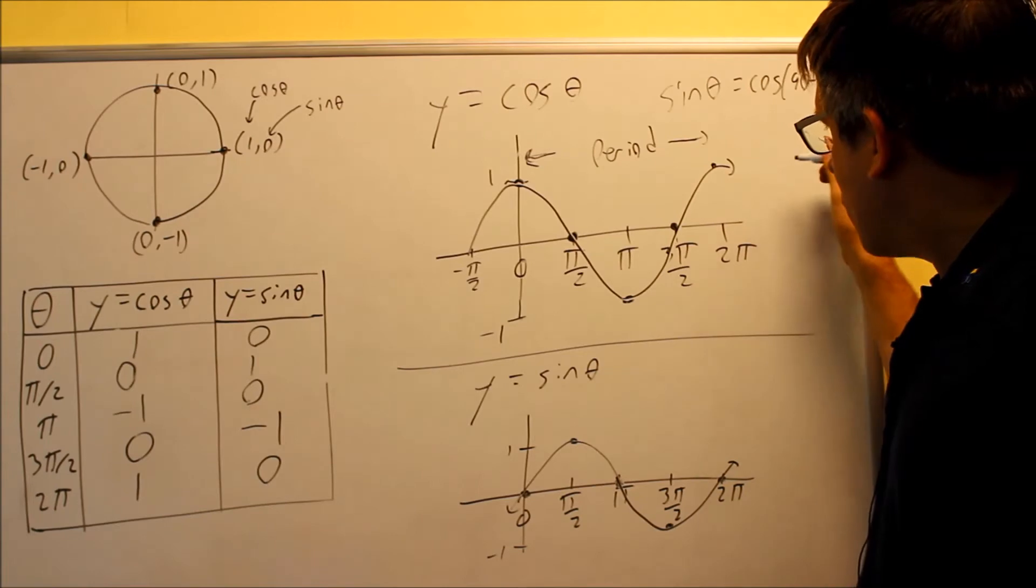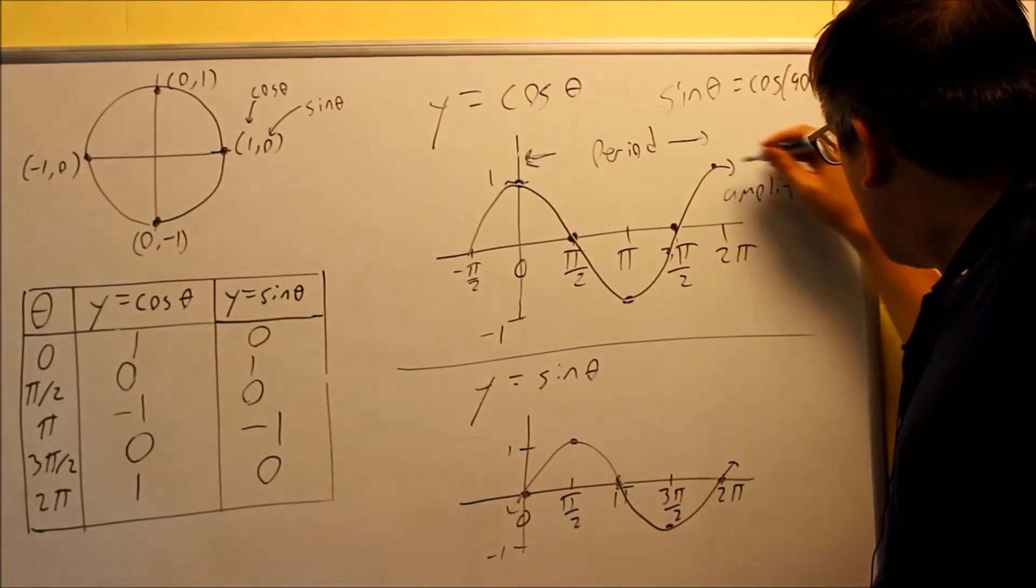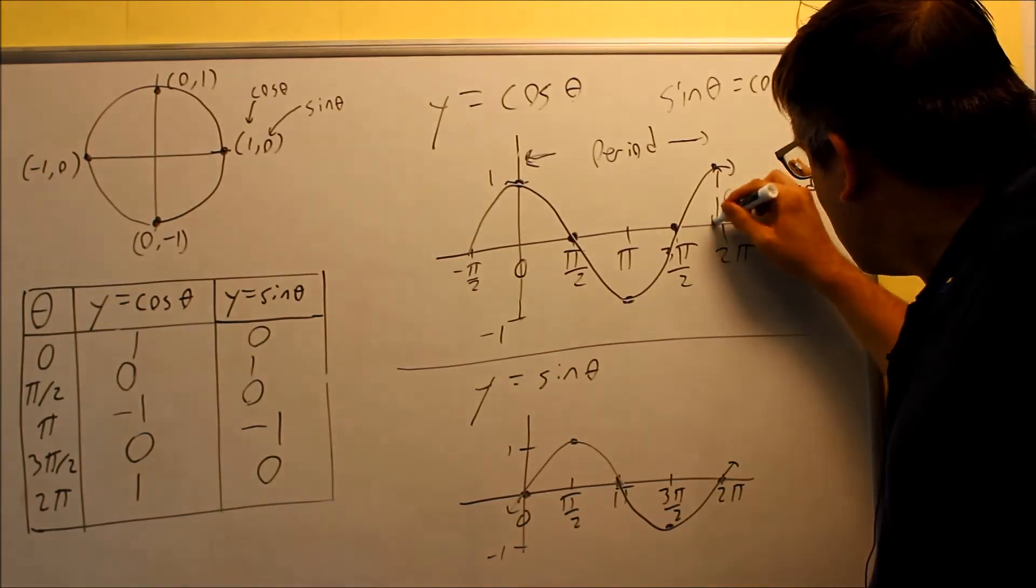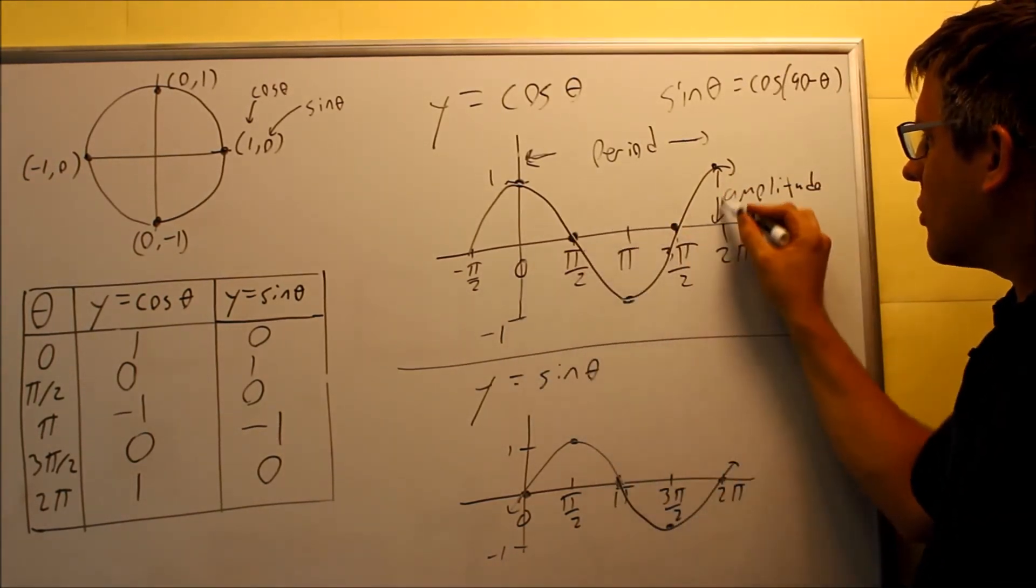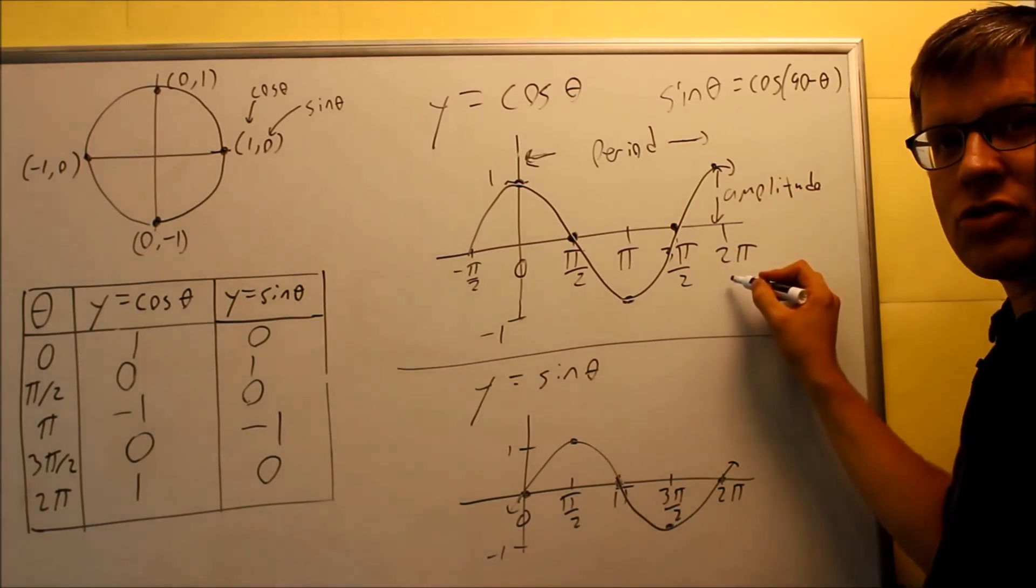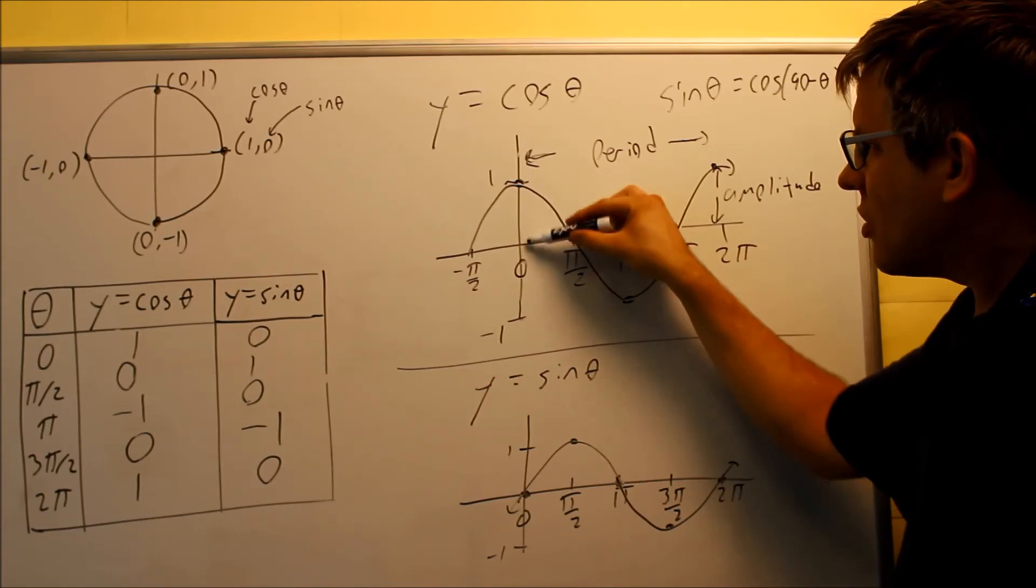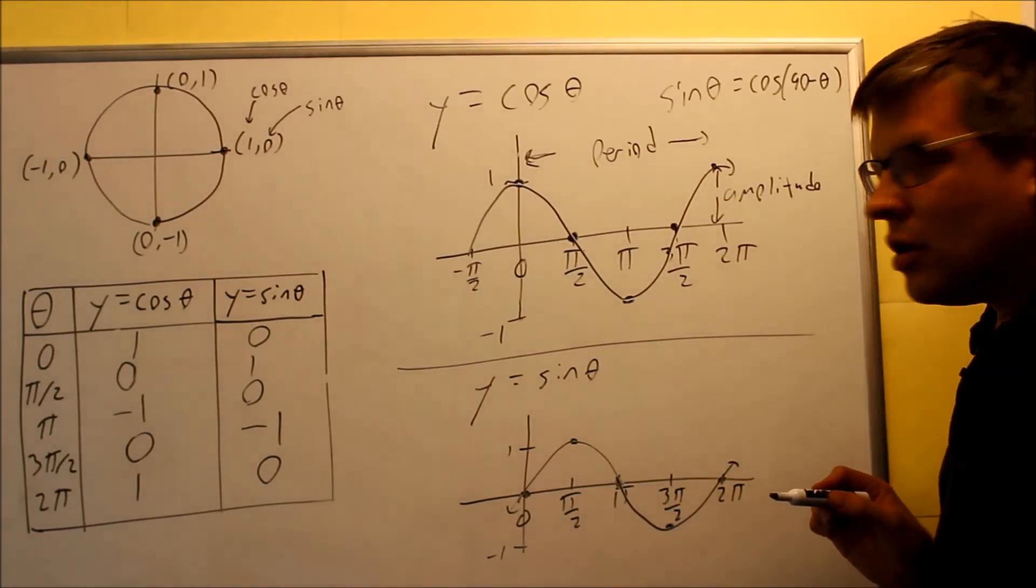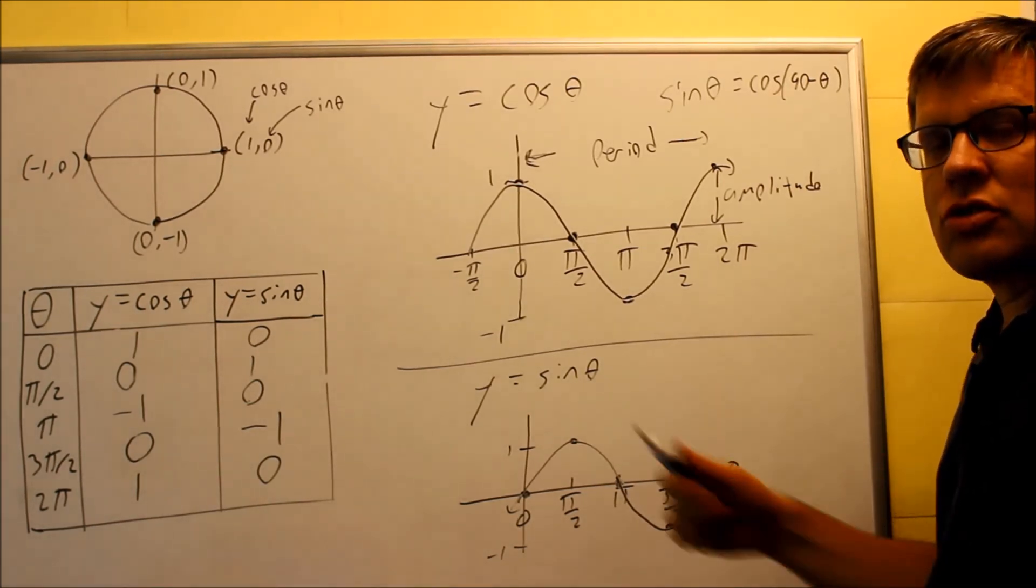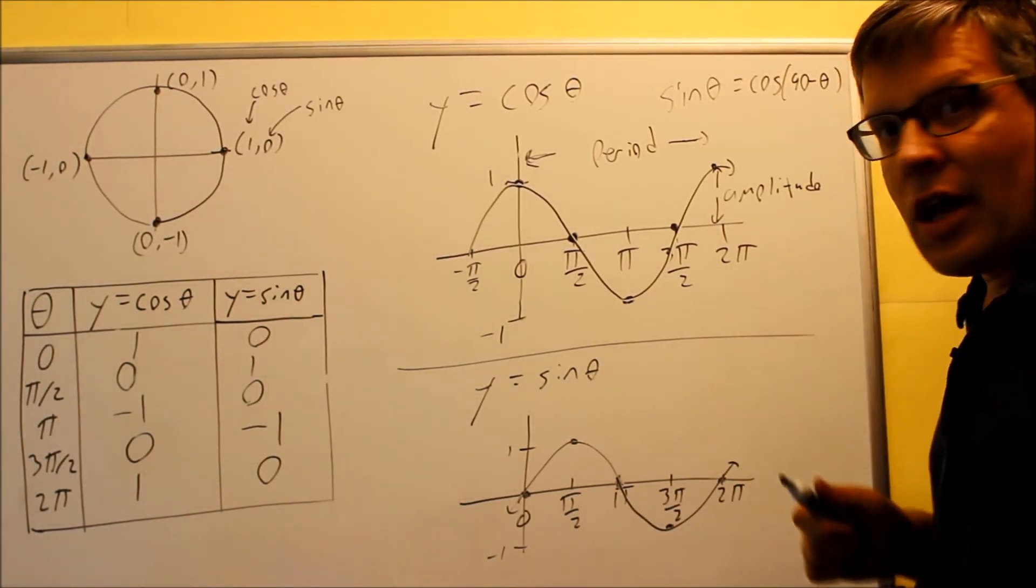Another definition I have is amplitude. So amplitude would be this height here. It's the height from the x-axis to either the top or the bottom of the graph. It should always be the same because the center line is going to run in between. So this distance right here or that distance, that's considered your amplitude. And we're going to look at that you'll be able to get these directly from the formulas themselves. And so that's what we'll look at next.